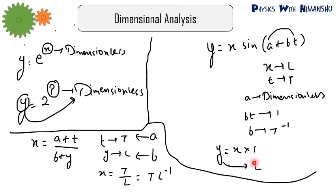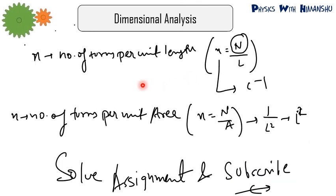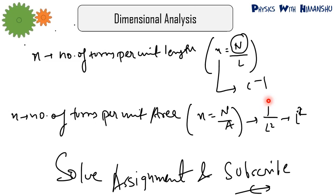Remember: if n is number of turns per unit length, then since number is dimensionless, dimension of n is L⁻¹. If n is number of turns per unit area, then dimension of n is L⁻². I will be sending a quiz with this lecture that you have to submit. If you have any doubts, you can send me on WhatsApp. Have a great day!